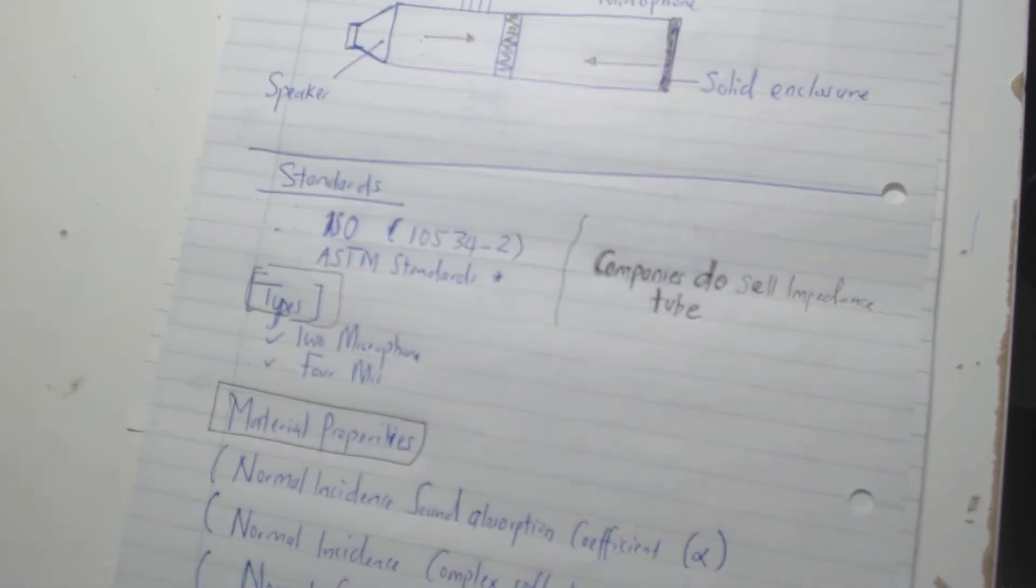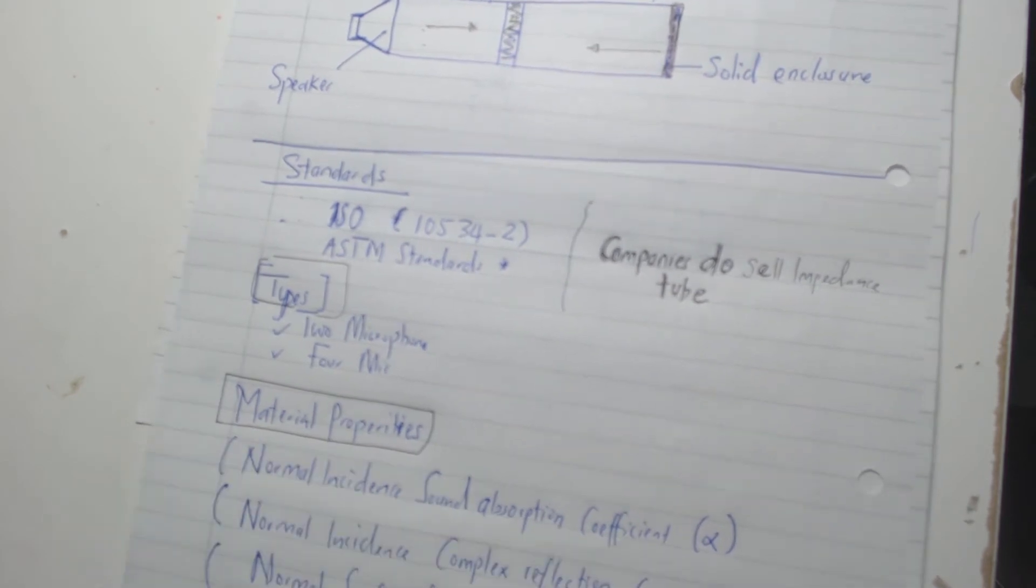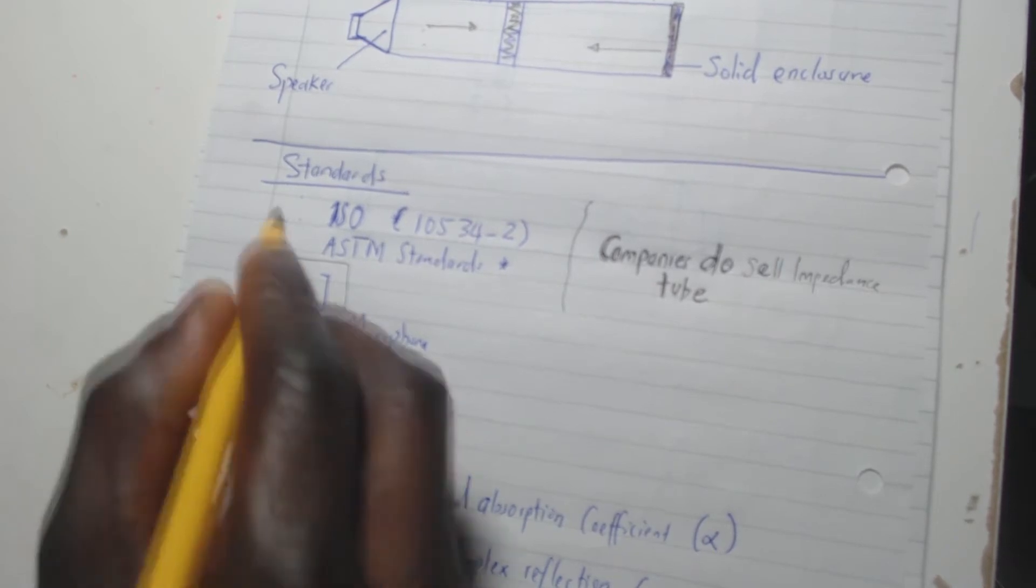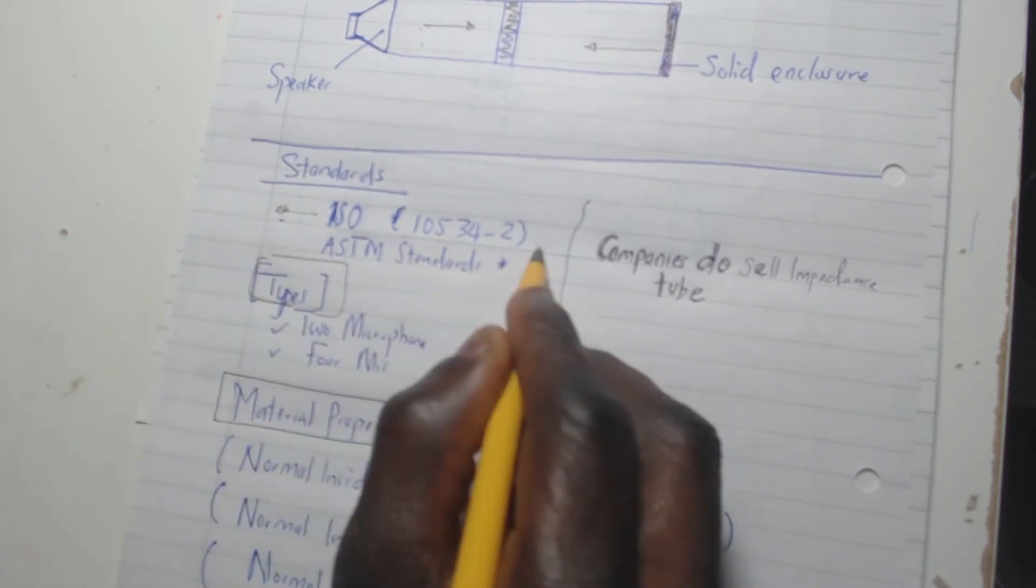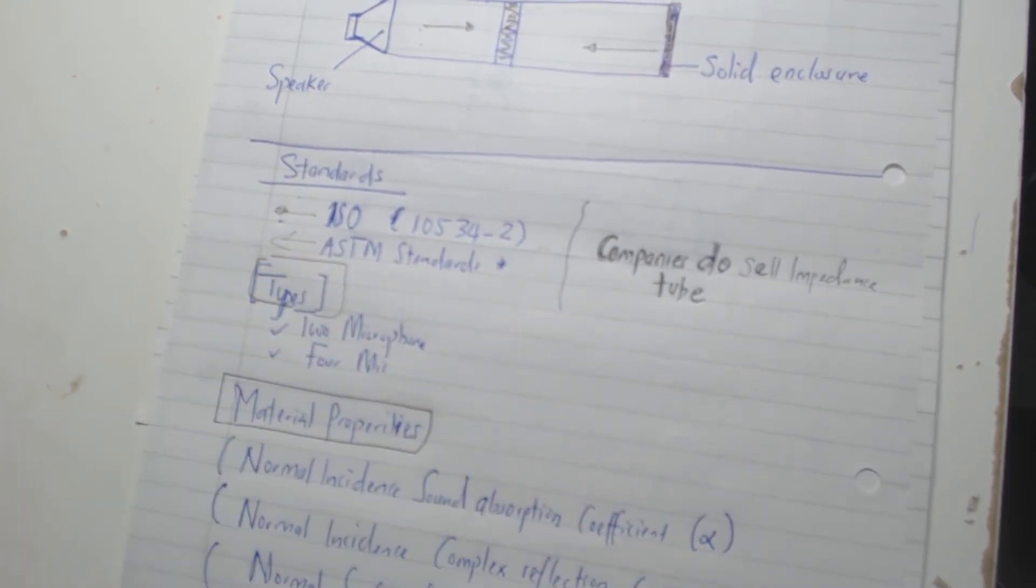Okay, moving on to the standards. Obviously the standards are important and I'm sure you've heard about the ISO standards. In acoustics we are also interested, at least in testing materials, we're interested in the standards and the two standards are the ISO standards and the ASTM standards.